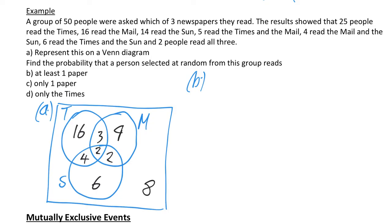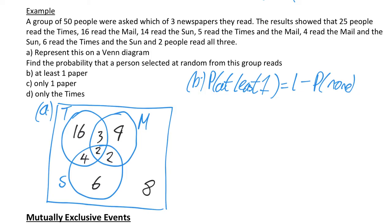We're now ready to answer the other parts. The first part asks for the probability that somebody has read at least 1 paper. The easier way to do it is 1 minus the probability of none, which is 1 minus 8 over 50 — because 8 people didn't read anything — which works out to 42 over 50, or 21 over 25.